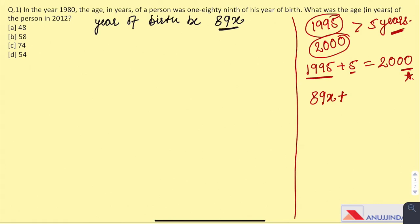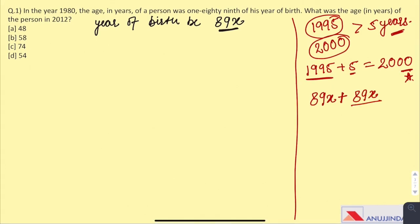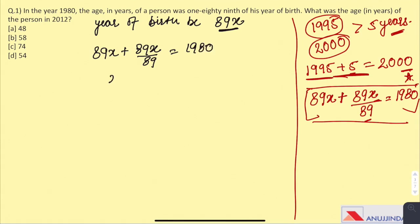The birth year we have assumed is 89x and in the question, it is given that the age of the person is 1/89th time of the year of his birth. So, year of birth is 89x and divided by 89 is going to be x. We have just put the values in the equation. Now, here we have 89x plus 89x/89 is 1980. We get x plus 89x is 1980.